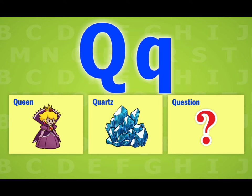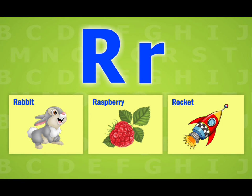R. The following words start with R: rabbit, raspberry, rocket.